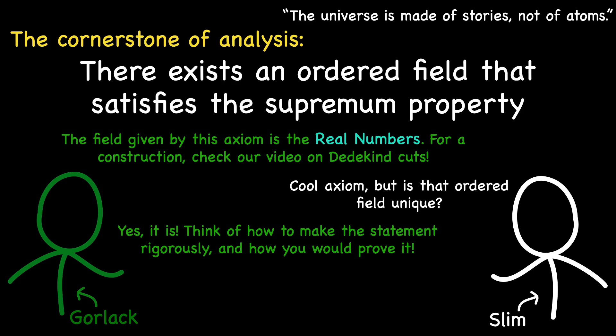Meanwhile, ponder over these questions. In what sense can two ordered fields be considered the same? And once you have a concept of sameness, how can you prove that any two ordered fields with the supremum property must be akin?